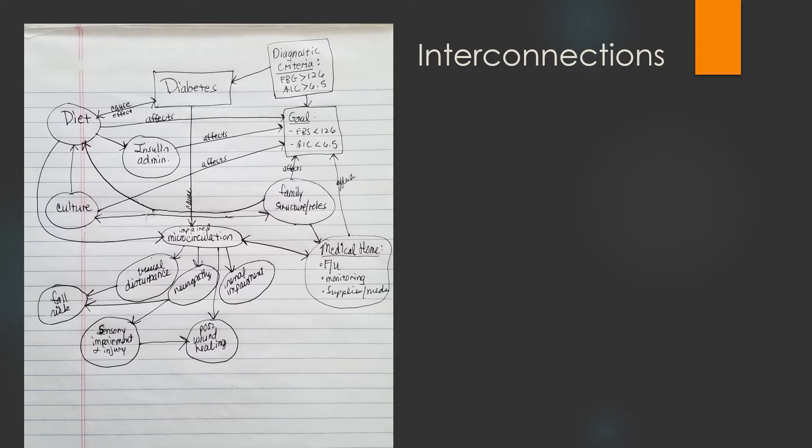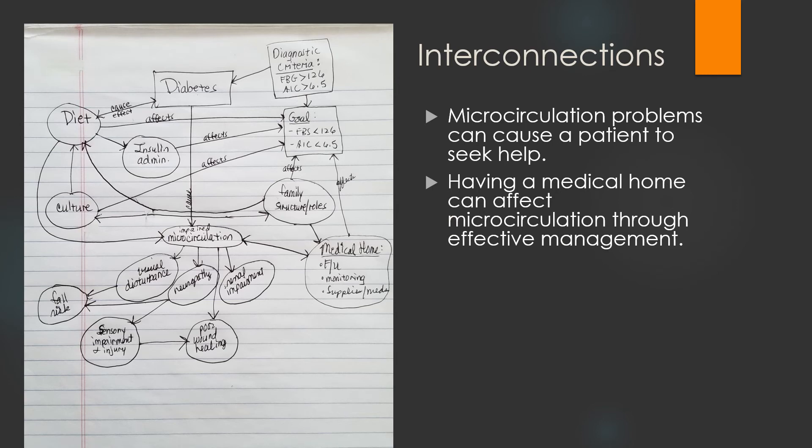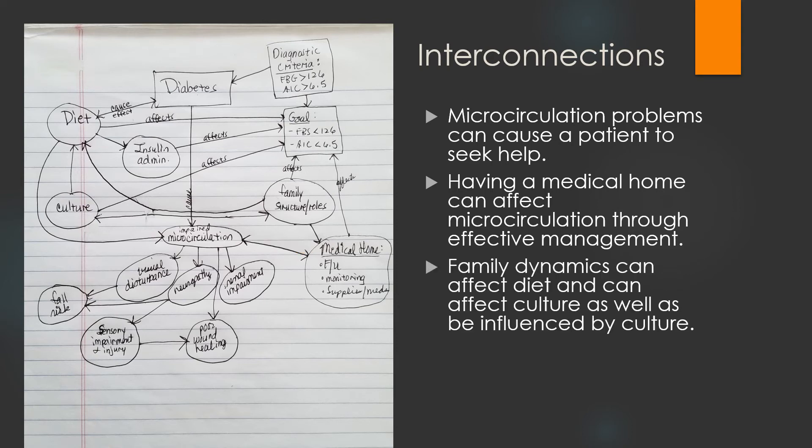This slide represents continued thinking about interconnections. Microcirculation problems can cause a patient to seek help. Having a medical home can affect microcirculation through effective management. Family dynamics can affect diet and can affect culture as well, as be influenced by culture, hence the arrow both ways. Culture can affect diet and diet can affect microcirculation.